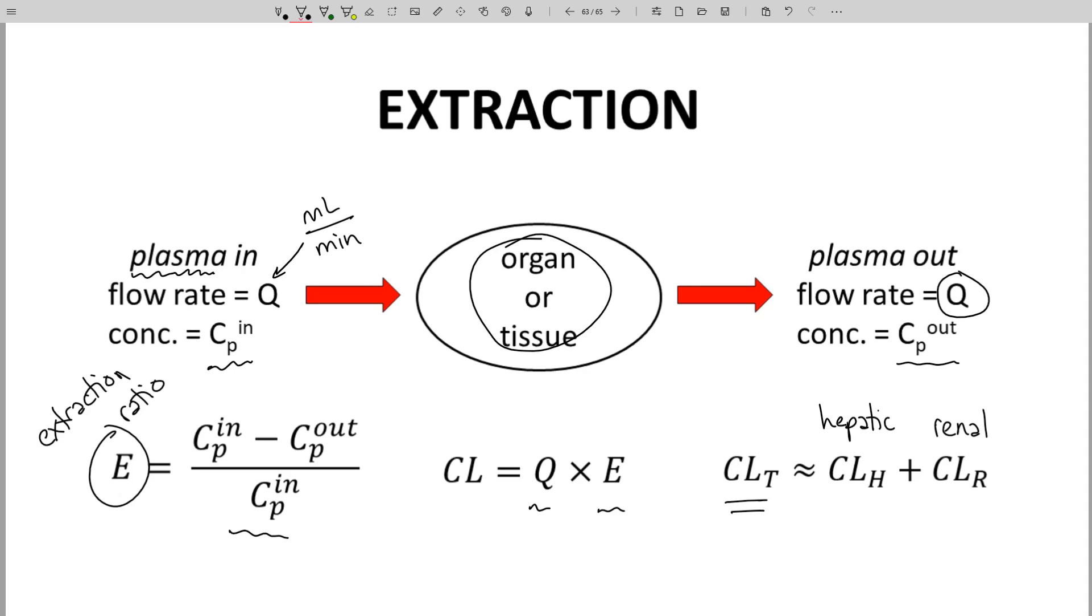Furthermore, many drugs have very low renal clearance, almost zero. In other words, the renal extraction ratio is close to zero. Of course, the renal blood flow QR is certainly not zero. Therefore, for many drugs, but certainly not all, total clearance is approximately equal to hepatic clearance.